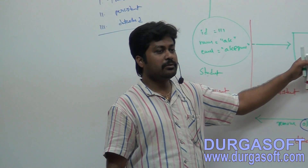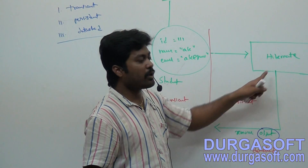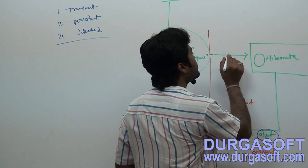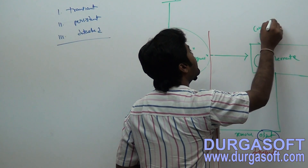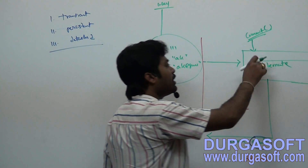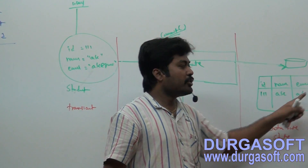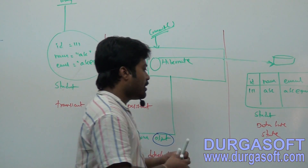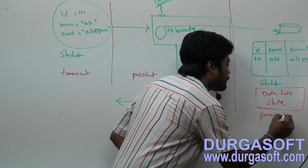Once you move your object to Hibernate and apply a transaction commit — after adding your object to Hibernate and calling commit — whenever you apply transaction commit, this object will move to the database. Whenever you apply commit on Hibernate, Hibernate will move the data to the database. So this state is the database state, also called permanent state — it permanently stores your data into tables.